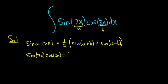That's equal to 1 half. And so we have sine of a plus b, so 7x plus 3x. 7 plus 3 is 10, so 10x plus and then 7x minus 3x. That's going to be 7 minus 3x, so that's 4x.